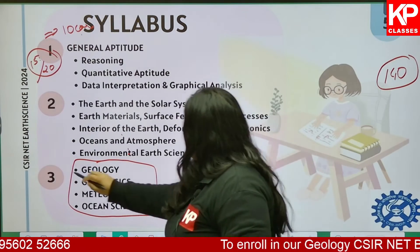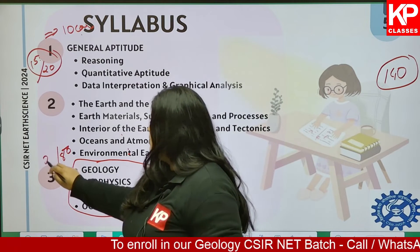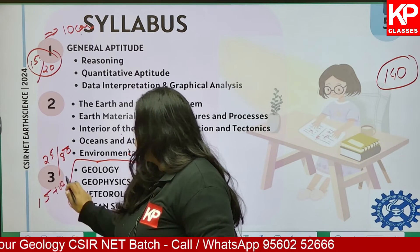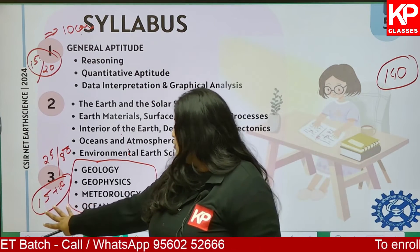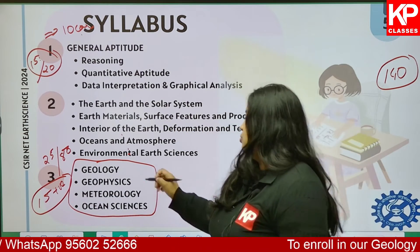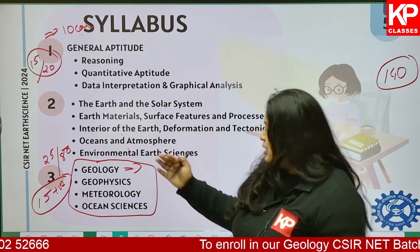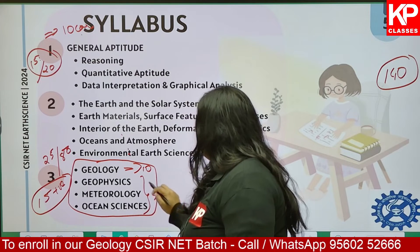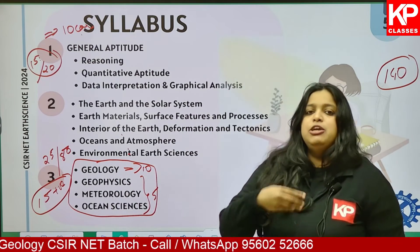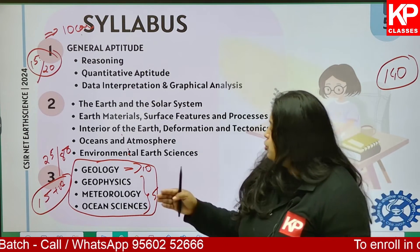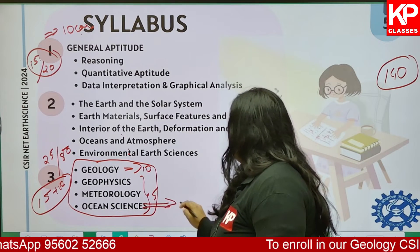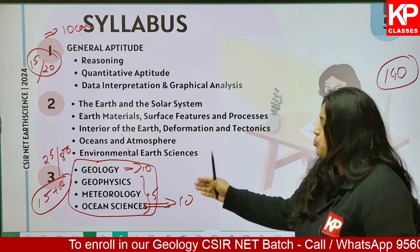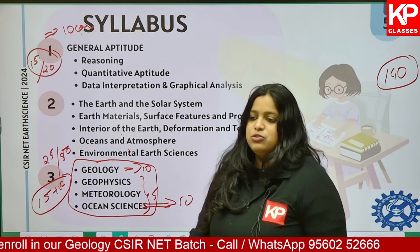Part C covers the entire geology section, and if you are a geology aspirant, you have to study this entire section thoroughly. In Part C, out of 80 questions the maximum attempts are 25, and out of these 25, you should have 15 correct answers. If you are thorough with geology, out of these 15 you can attempt 10 questions from geology alone, and only the remaining 5 need to come from other subjects.